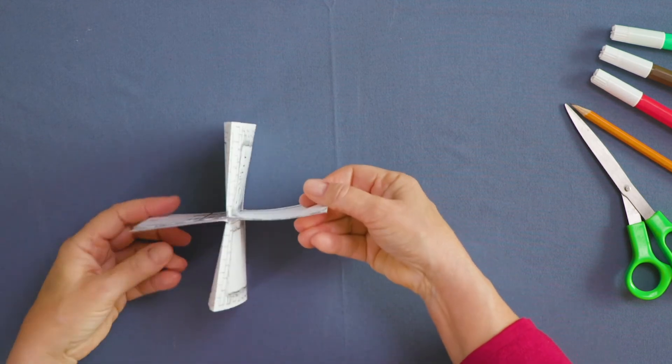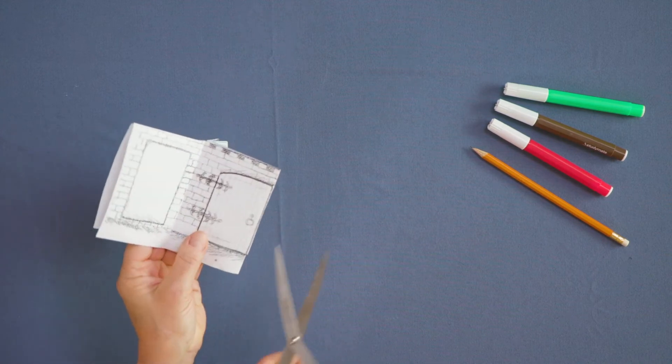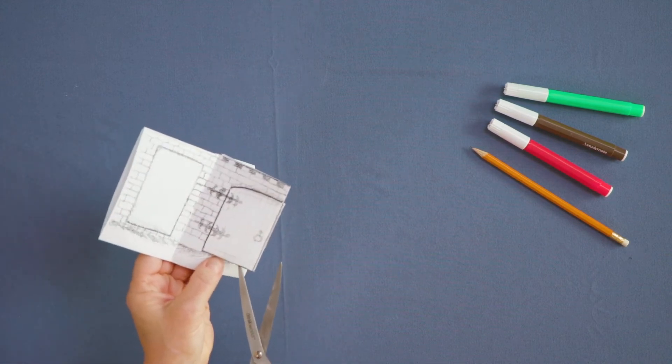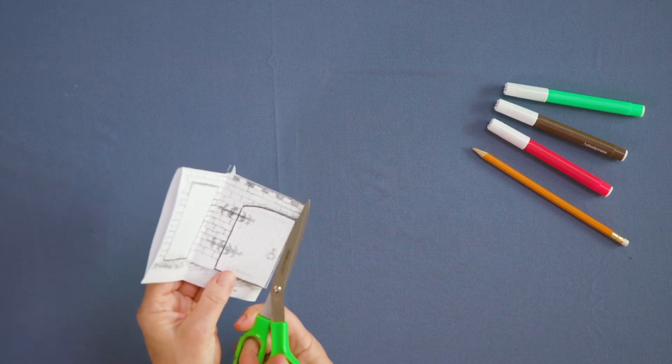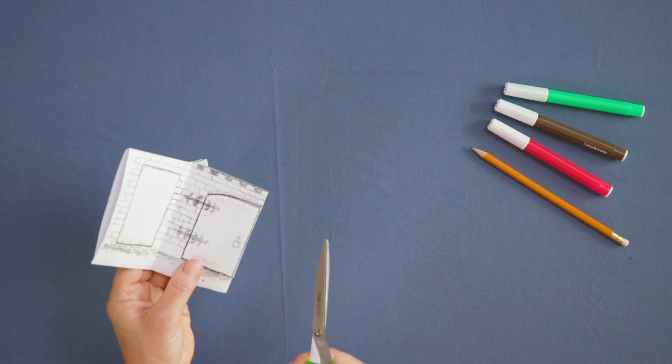Open the scissors wide. Slide one blade of the scissors along between the castle doors to cut them apart. Be careful not to cut above or below the doors. If you do, you can tape it together.